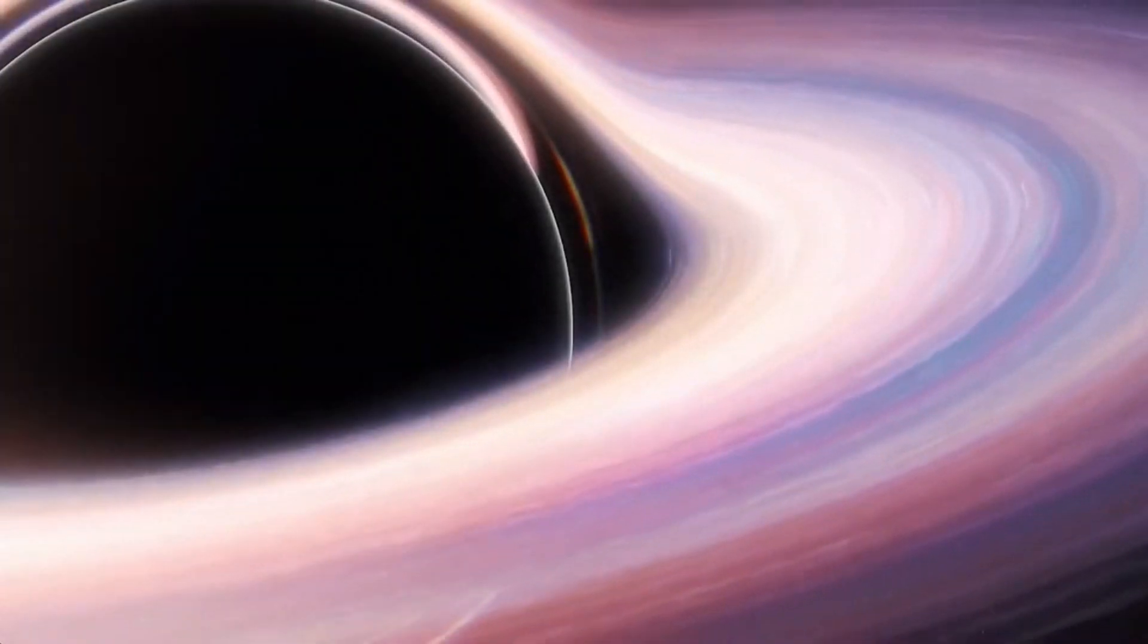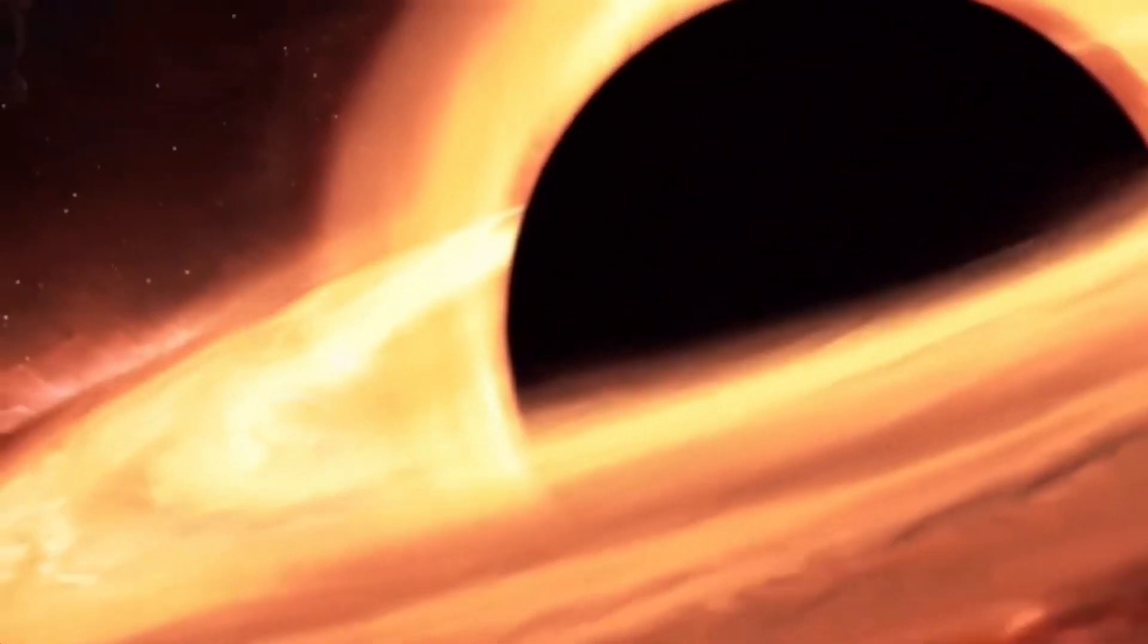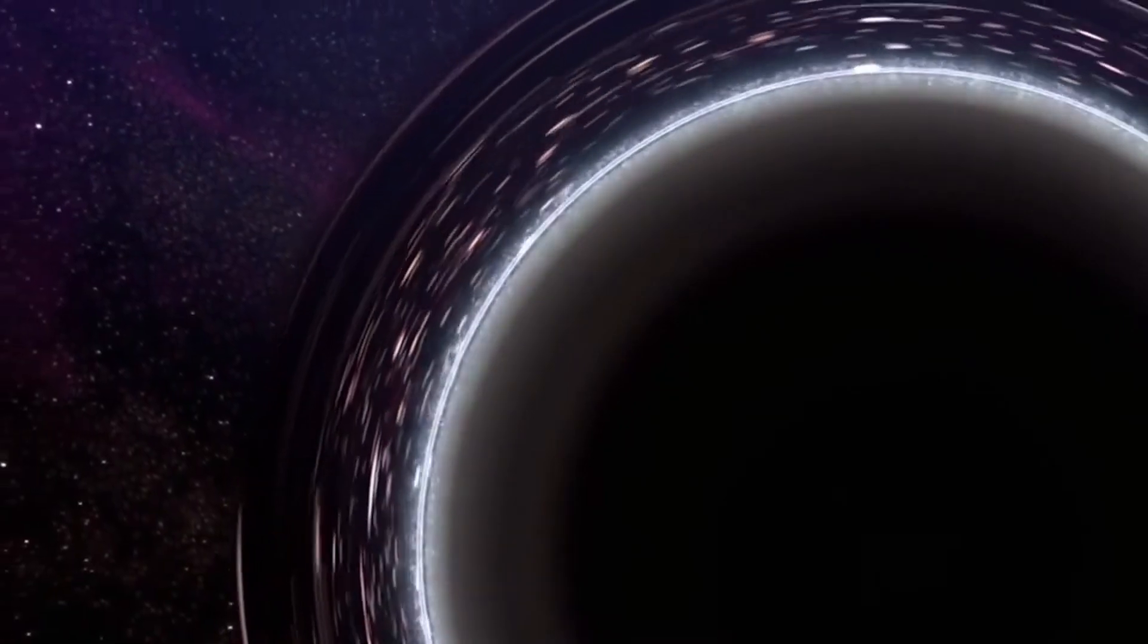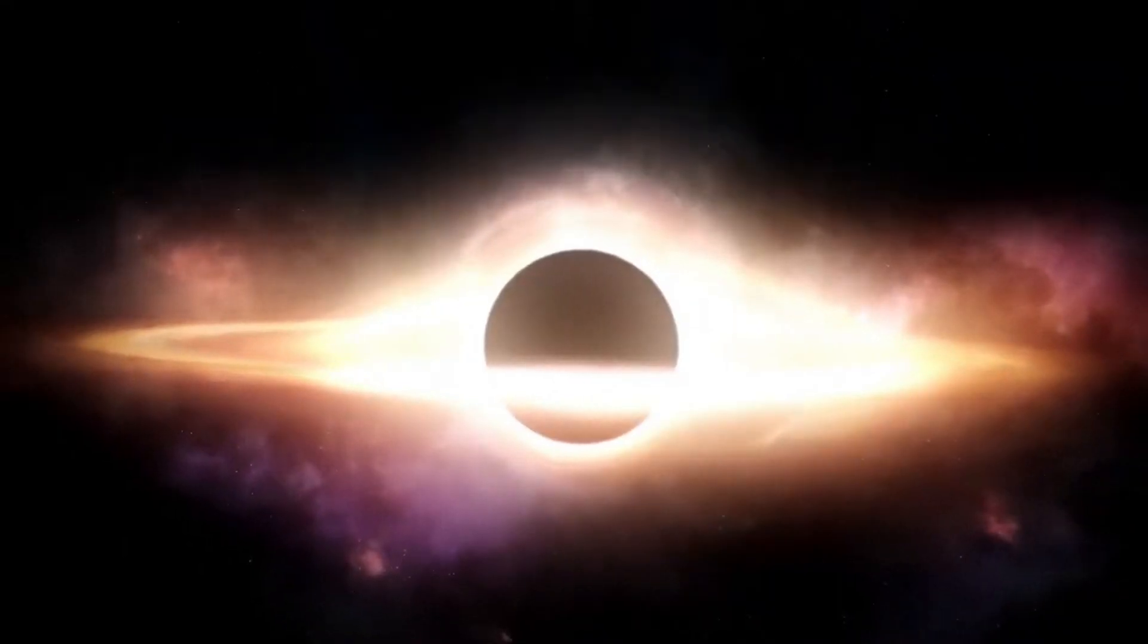We know that the event horizon is like the outer boundary of a black hole. It can be imagined as an outer ring surrounding a black hole. If an object goes beyond this outer boundary, it can never return.